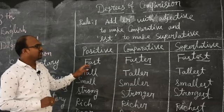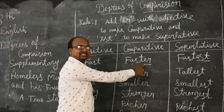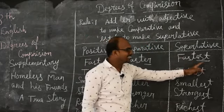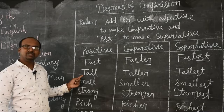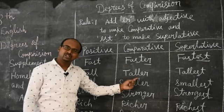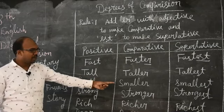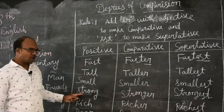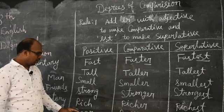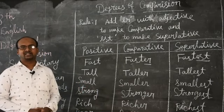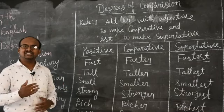Let us see the example. Positive: fast — that is the adjective. In comparative, we add ER: faster. Superlative, EST: fastest. Next word: tall — positive adjective. Comparative: taller. Superlative: tallest. Next: small, smaller, smallest. Strong, stronger, strongest. Rich, richer, richest. Poor, poorer, poorest. This is what the first rule says.